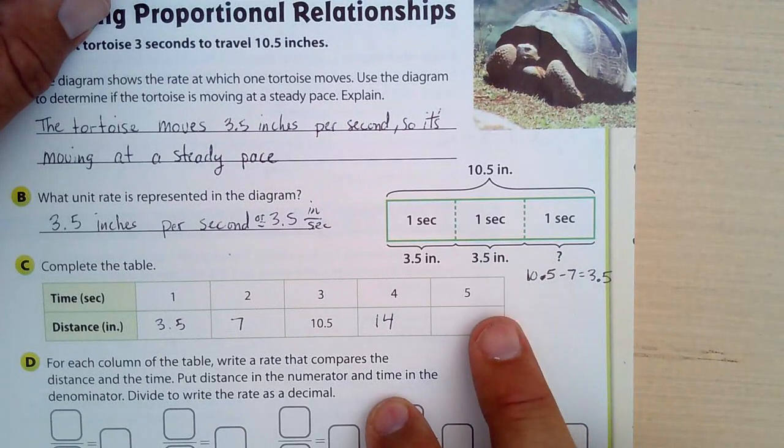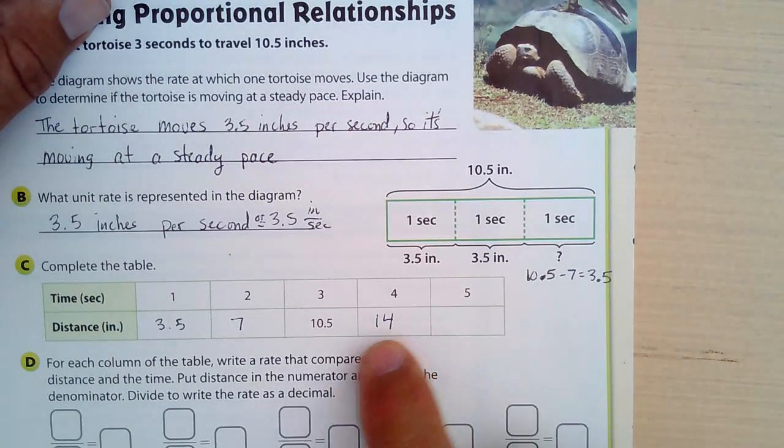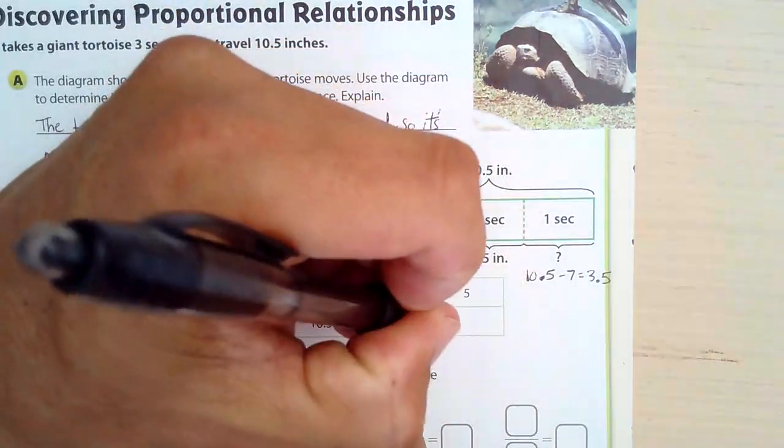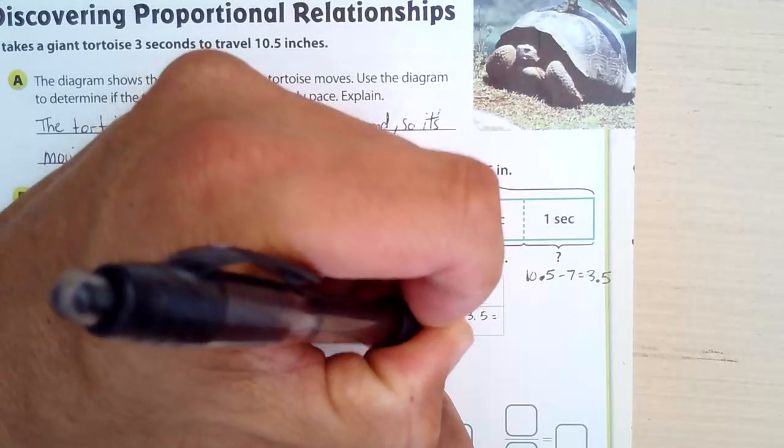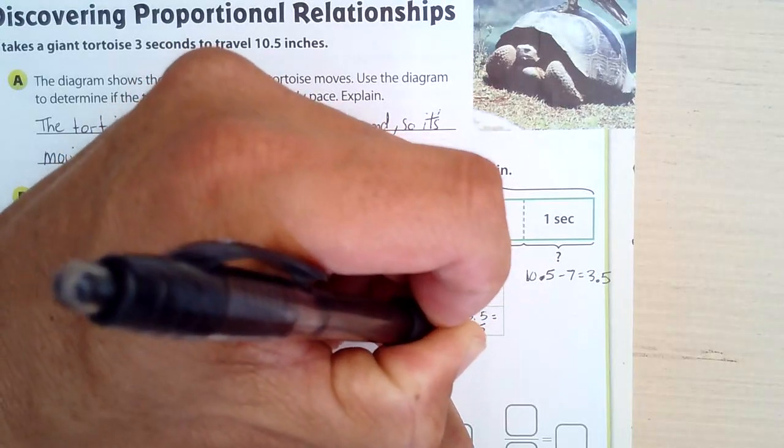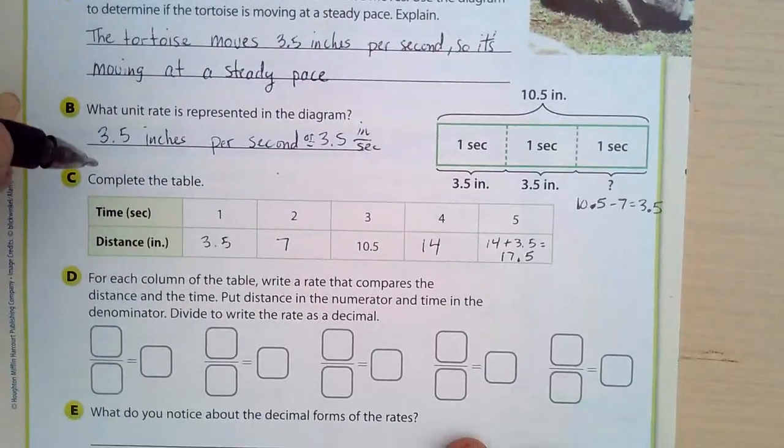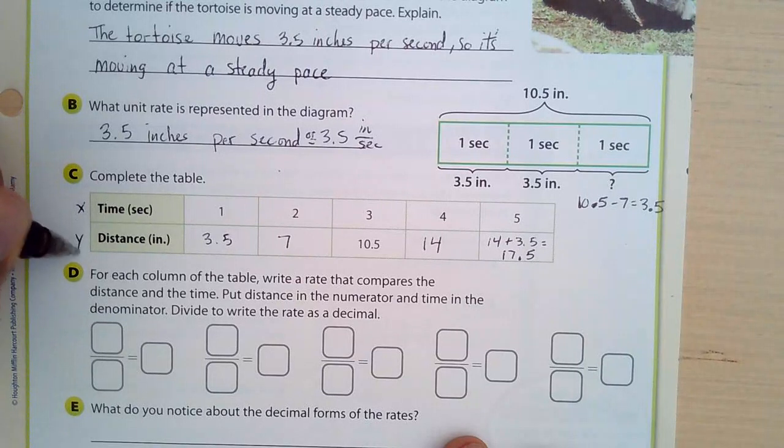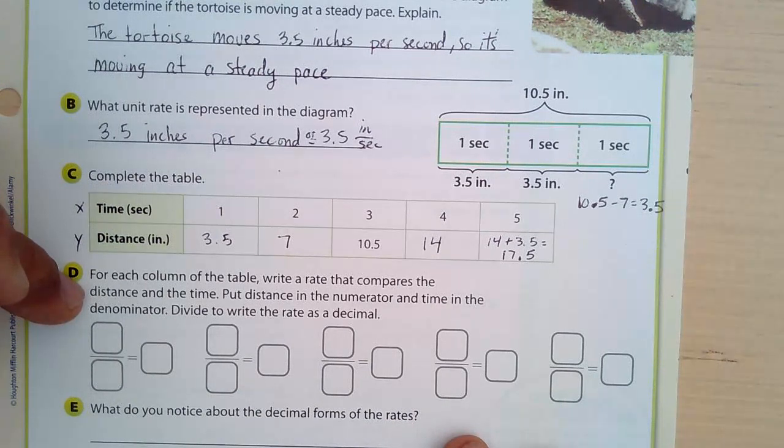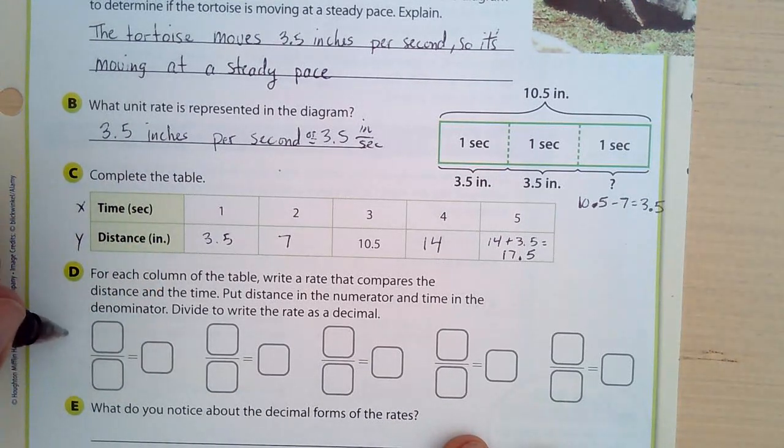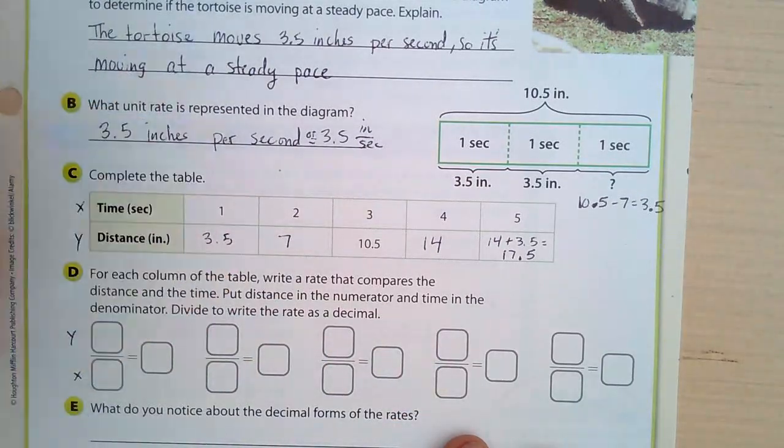Now, 5. Maybe what I would take is the 4 plus 1 is 5. So I'd pick 14 plus 3.5. I could do that. So this would be 14 plus 3.5, which is 17.5 right there. Okay. Now, what I could do, and we have to know that these are the x numbers and these are the y numbers in our table. So for each column, write a rate that compares the distance in time. Put the distance in the numerator. Okay, distance in the numerator.